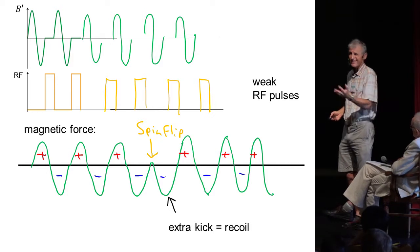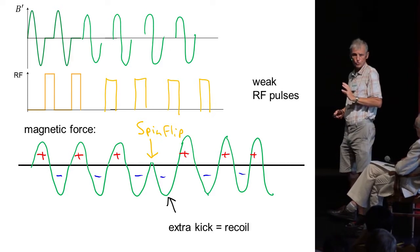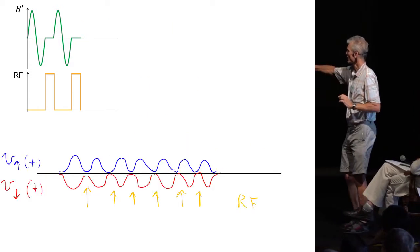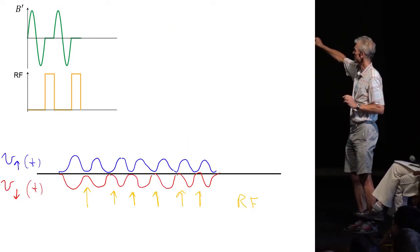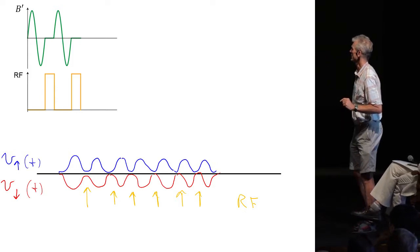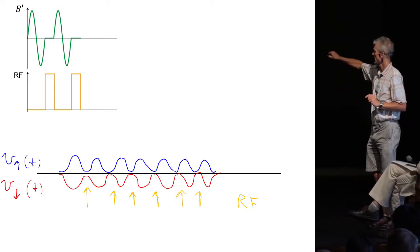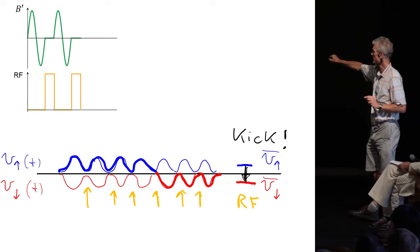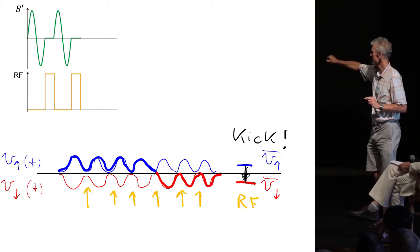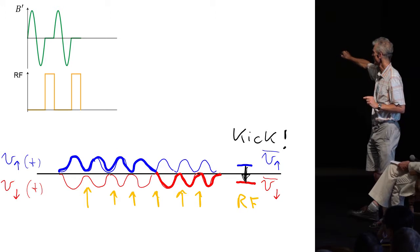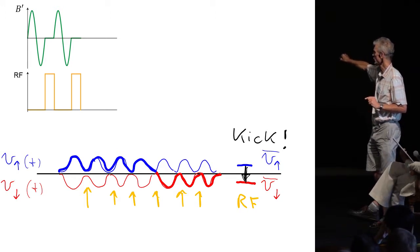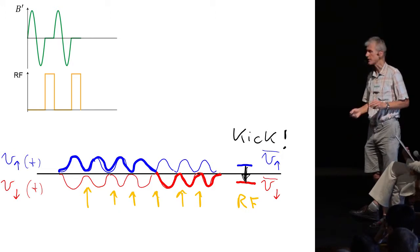That's maybe not the exact way how you should look at it. You should rather say that when we have the magnetic gradient the spin up and spin down atoms have a periodic velocity modulation. And if we flip the spin with that pulse we have a transfer from an average velocity which is higher to an average velocity which is lower and therefore there is a momentum kick.